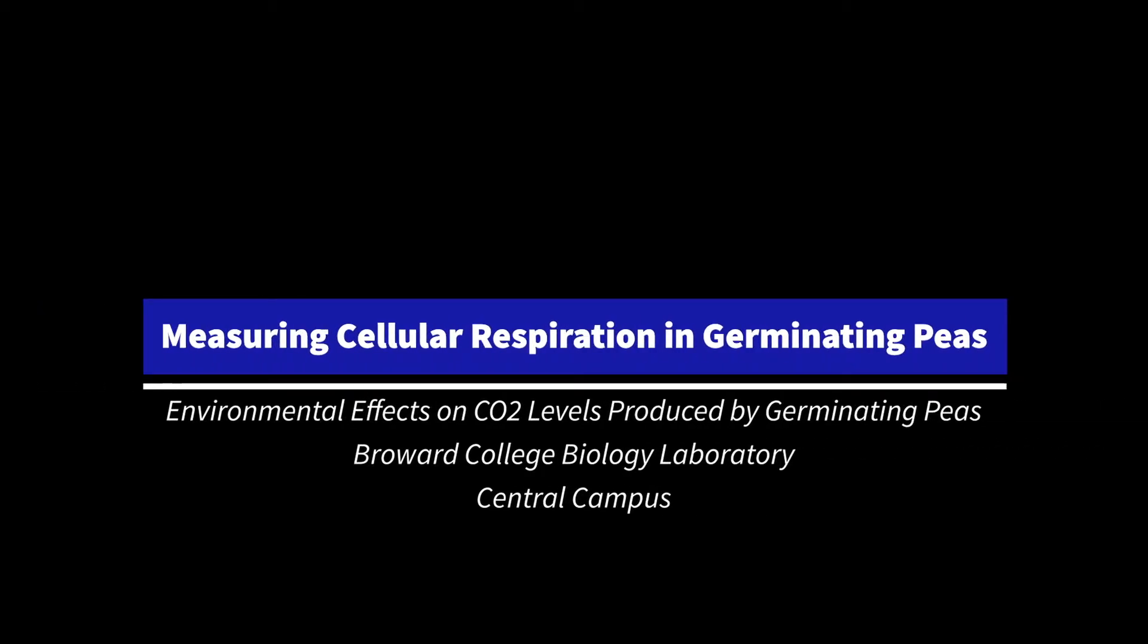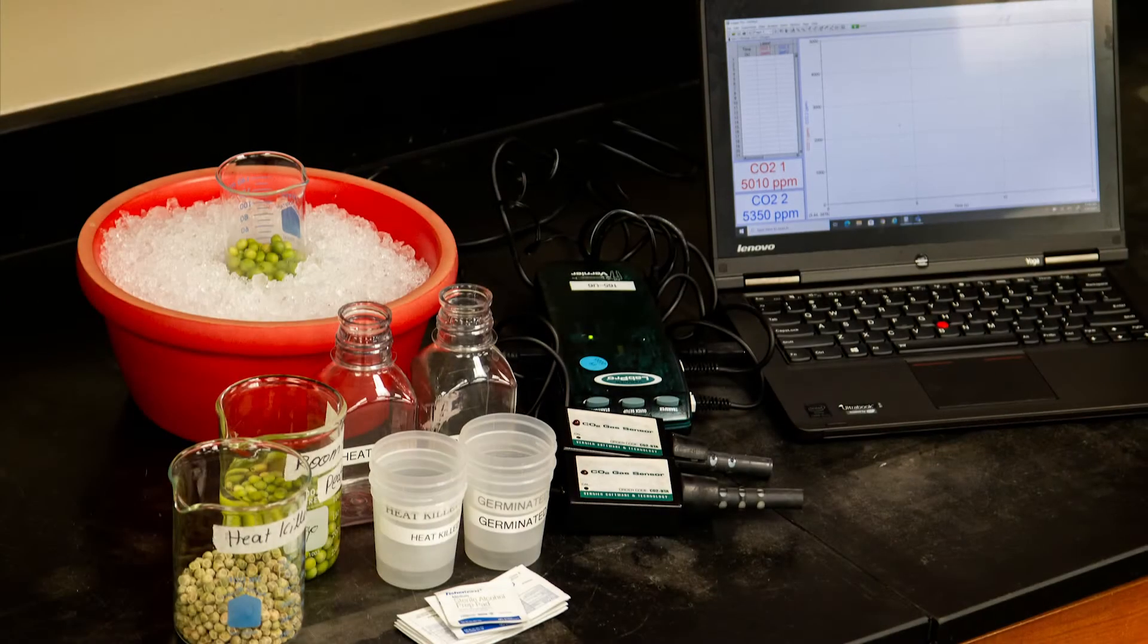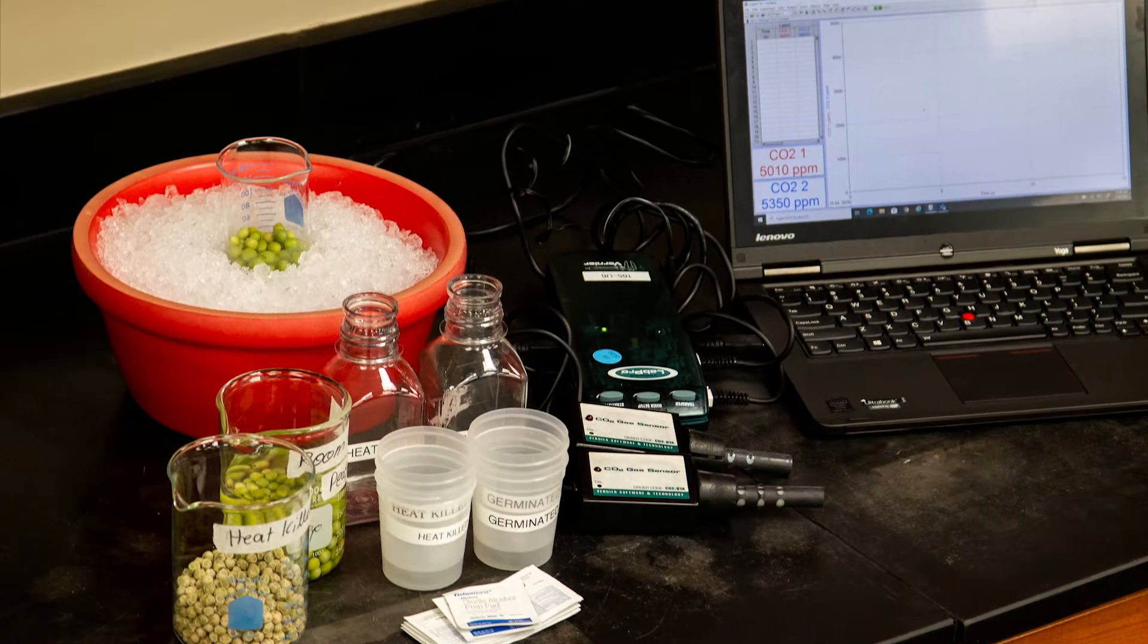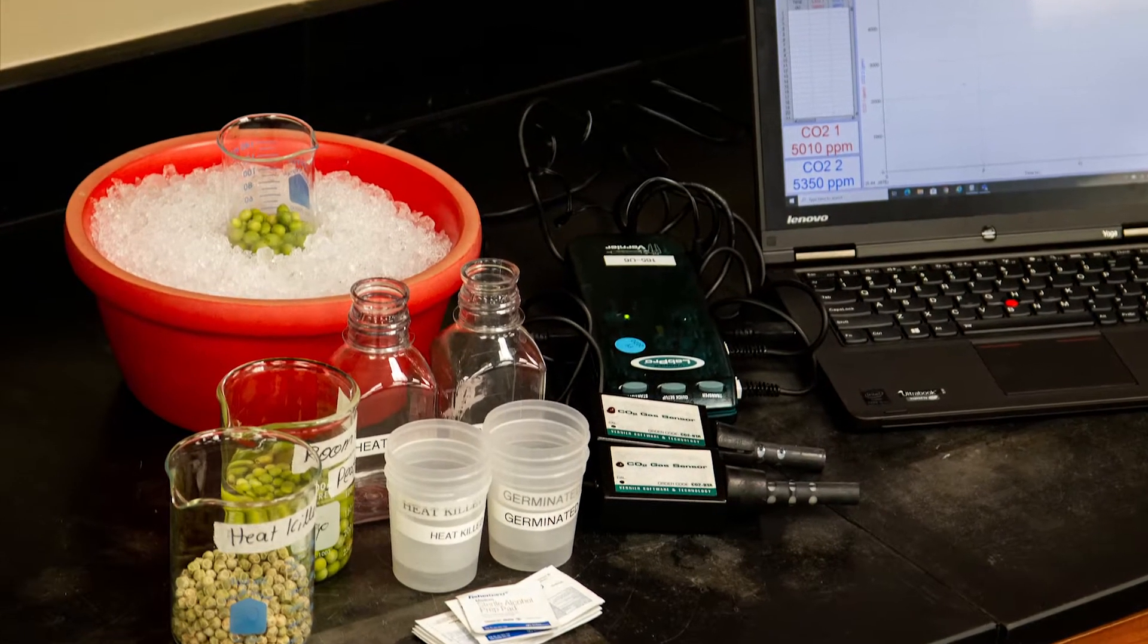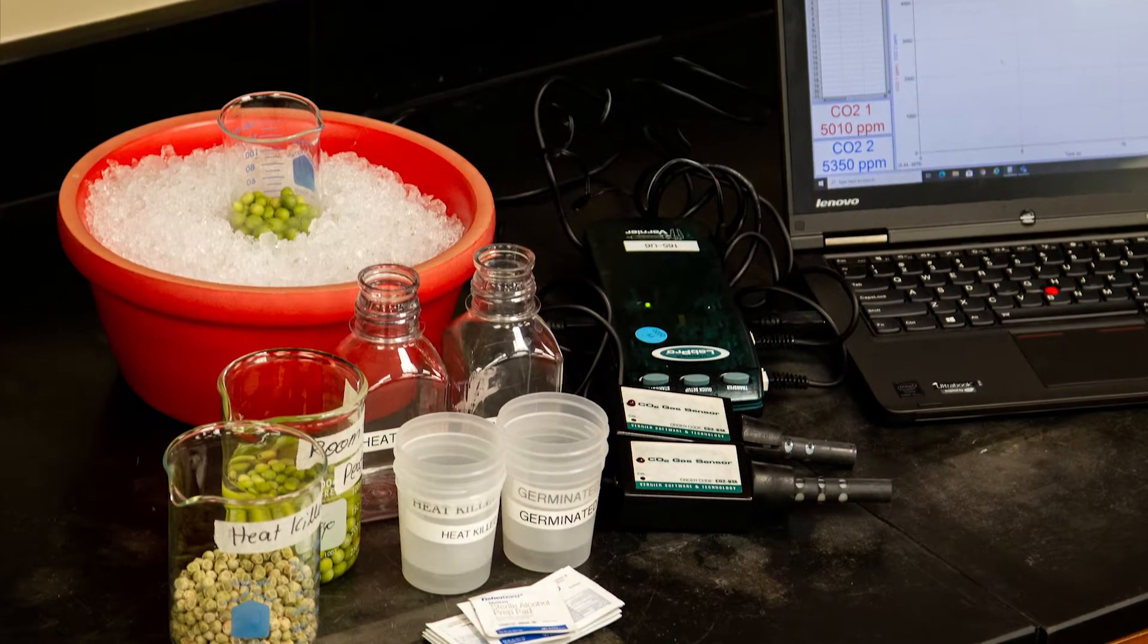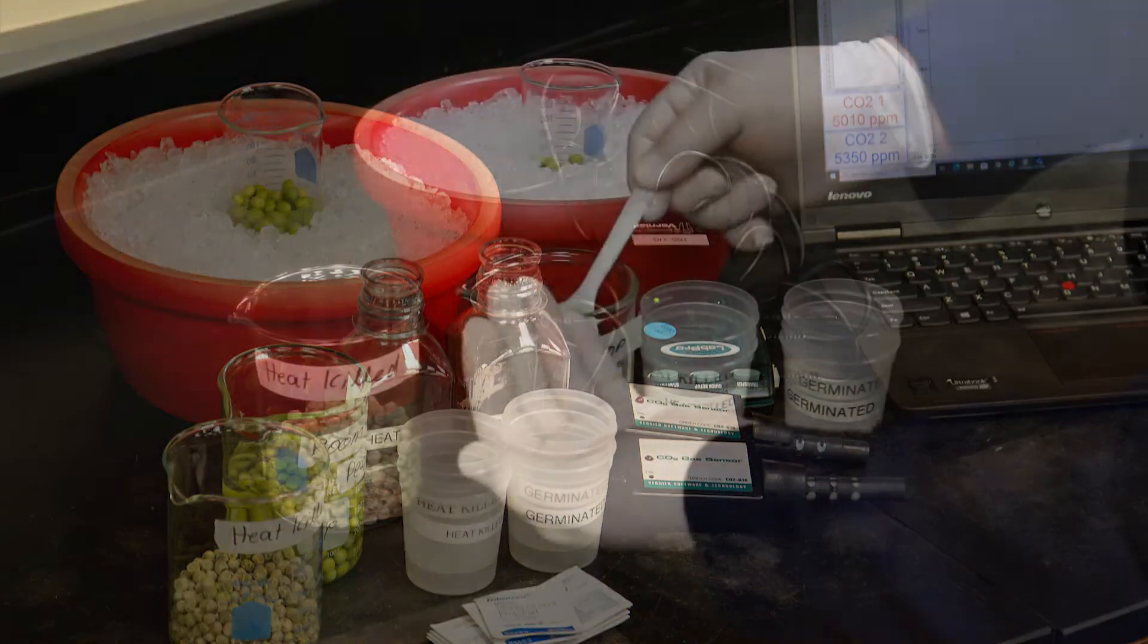Hello, for today's lab we will be measuring cellular respiration in germinating peas. We're going to be looking at some environmental effects on the levels of CO2 production using germinated room temperature peas, heat killed peas, and germinated peas on ice.